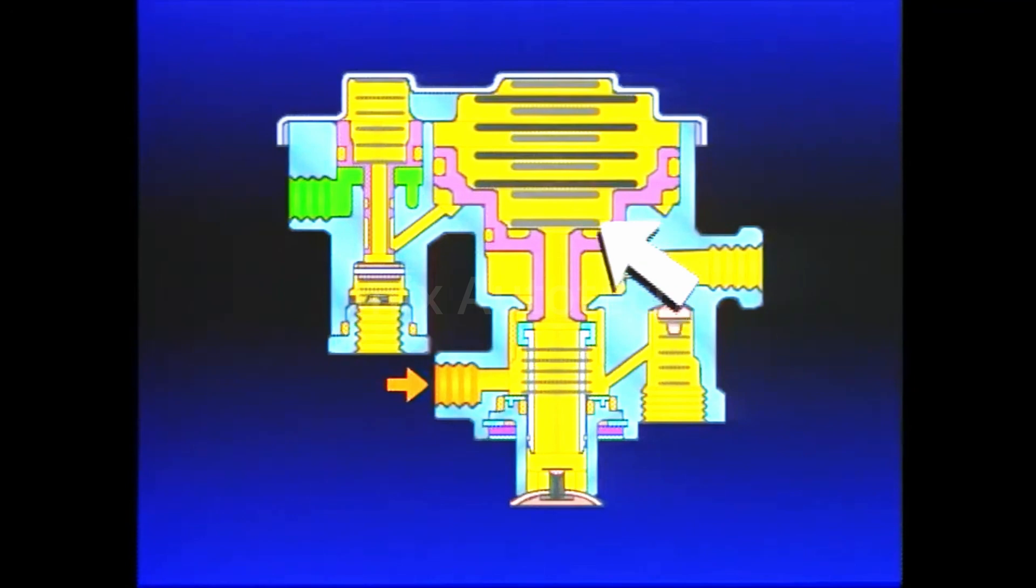Piston B, held down by spring force, seals off the exhaust and holds the inlet open. Air pressure from the PP1 enters the supply port, flows past the open inlet valve under Piston B, and onto the spring brakes.